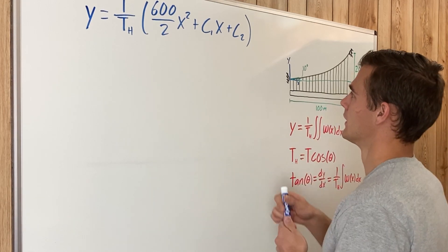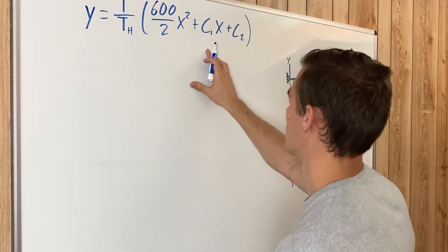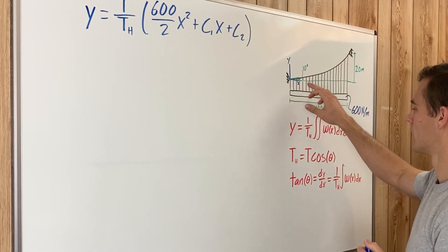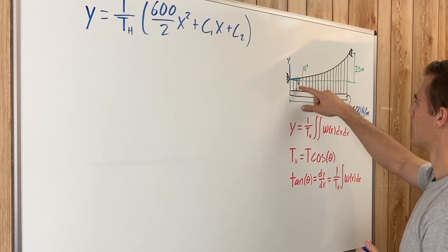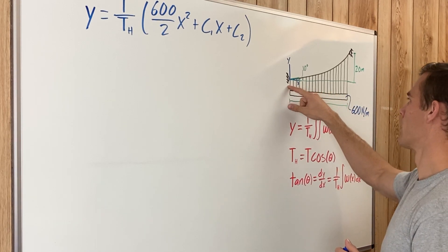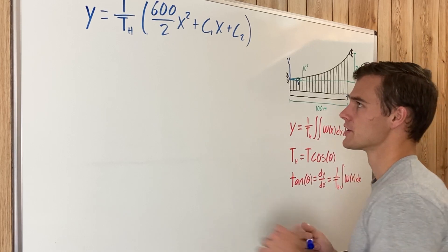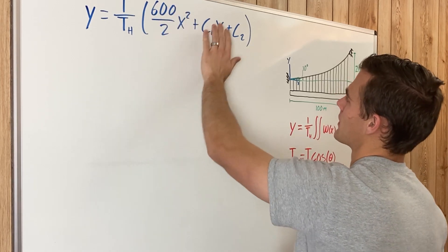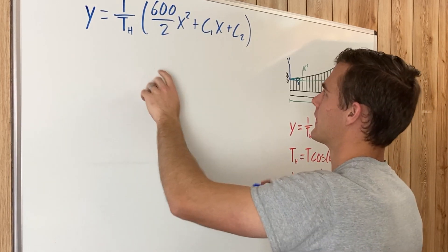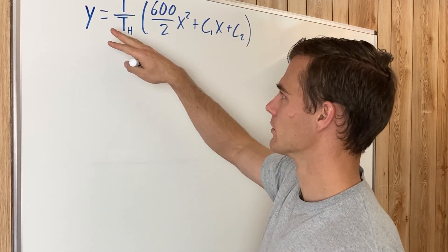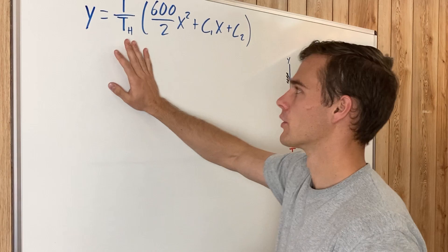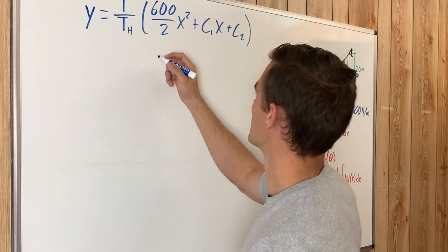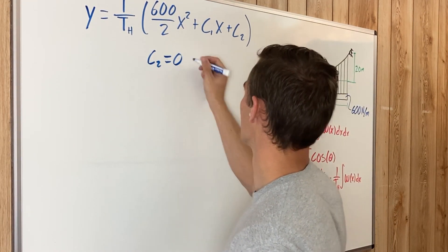To find C2, we plug in the known boundary condition: at x = 0, y = 0. Substituting these values, the x² term and the C1 term both go to zero, leaving C2/Th = 0. Since Th cannot be zero, we conclude that C2 = 0, and that term drops out.